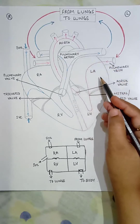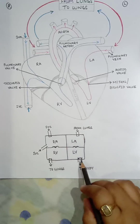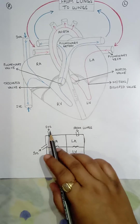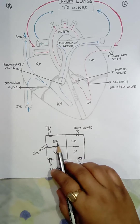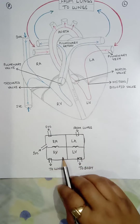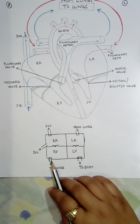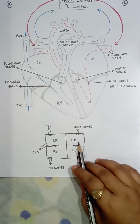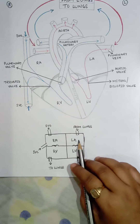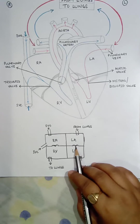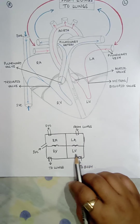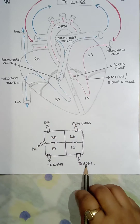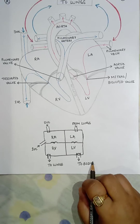In a simplified diagram, imagine the heart as a box with four chambers. Two vena cavae drain deoxygenated blood into the right atrium, from which blood passes through a valve to the right ventricle, and then goes to the lungs. Oxygenated blood returns from the lungs to the left atrium, passes through the mitral valve into the left ventricle, and exits through the aorta to the body.